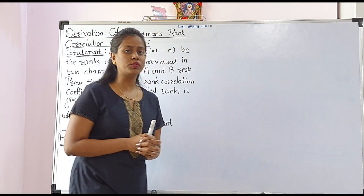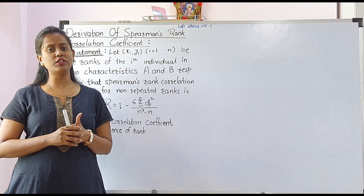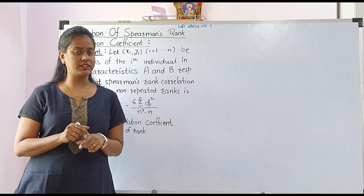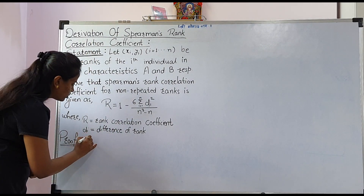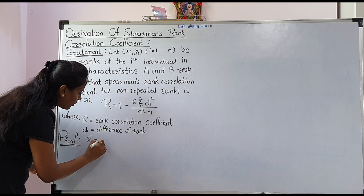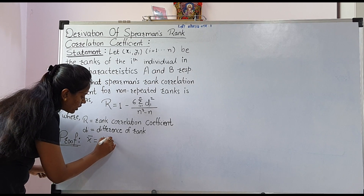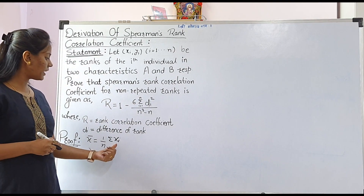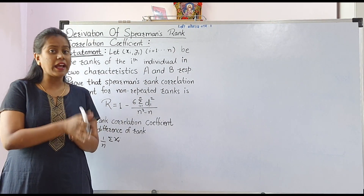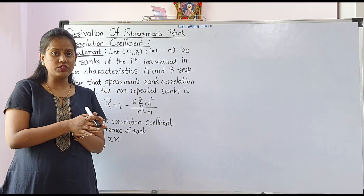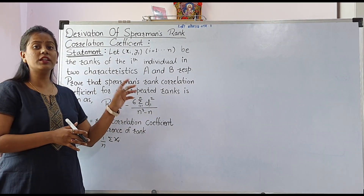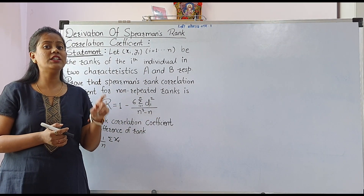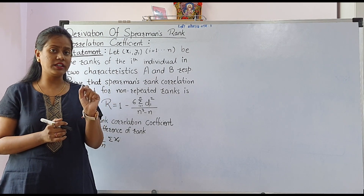Now let's start the proof. First of all, we will calculate the mean and the variances. x̄ is defined as (1/n)·Σxᵢ. Now, here xᵢ is the ranking of the i-th individual, and since the ranks are not repeated, we have distinct numbers.